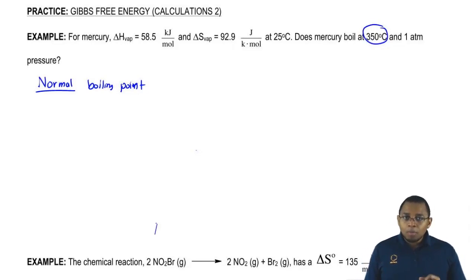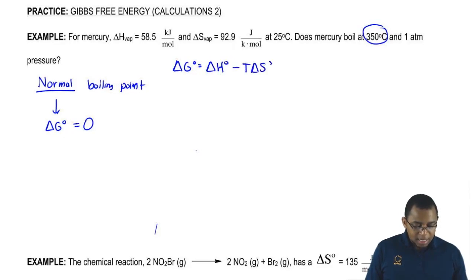Remember, if we're looking for the normal boiling point of mercury, we're going to assume that delta G0 is equal to zero. And doing this, we're going to say delta G0 equals delta H0 minus T delta S0. Since this is equal to zero, we can now plug in all we know.